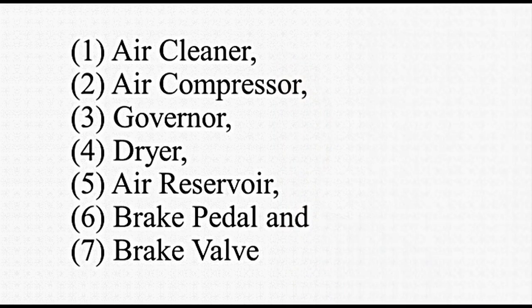The main components of the air brake system are: 1. air cleaner, 2. air compressor, 3. governor, 4. dryer, 5. air reservoir, 6. brake pedal, and 7. brake valve. Apart from these, the air brake system also has a slack adjuster and S-cam. With the help of these two, brake shoes are pushed, coming into frictional contact with the wheel drum so brakes are actuated. Use of disc brakes is not common in heavy vehicles; disc brakes have higher efficiency compared to drum brakes, however they cost more.